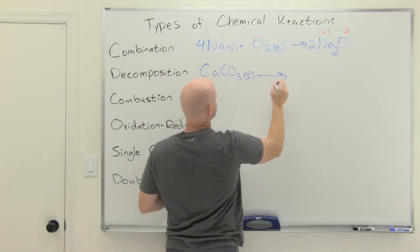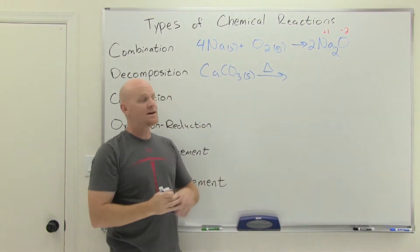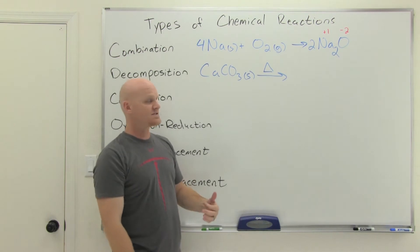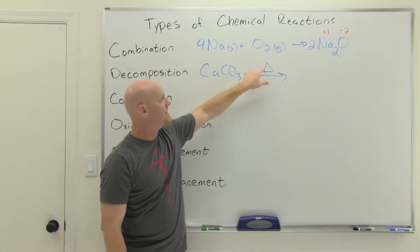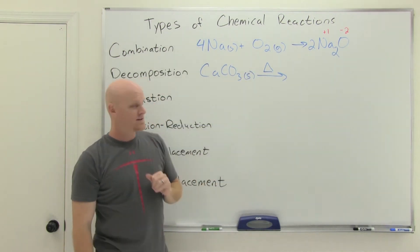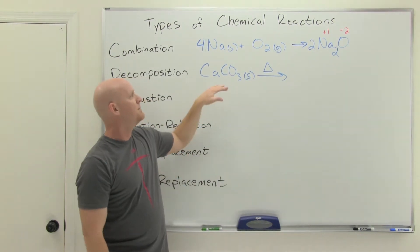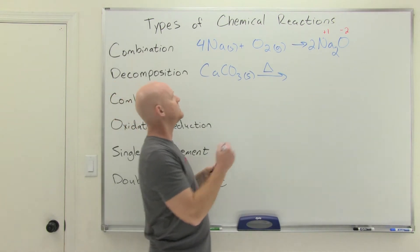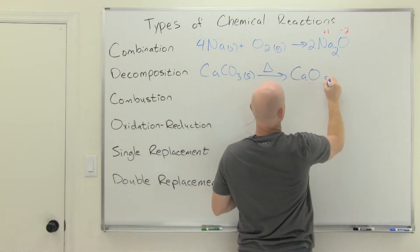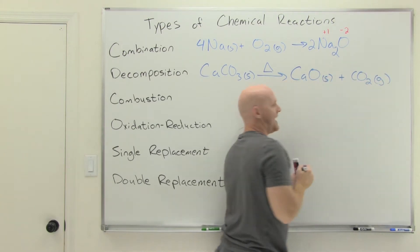If you heat calcium carbonate — we often use the triangle delta symbol to represent heat — it turns out it turns into calcium oxide and carbon dioxide gas. We use that delta symbol to represent heat being applied.